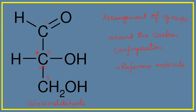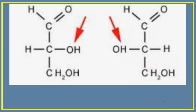In order to determine the configuration of a particular carbohydrate, we take glyceraldehyde as the reference compound and look at the asymmetric carbon. If the hydroxyl group is located towards the right side, then that glyceraldehyde is said to be D-glyceraldehyde. If the hydroxyl group is towards the left side of the asymmetric carbon, it is said to be L-glyceraldehyde. Capital D means the hydroxyl projects to the right; capital L means it projects to the left.